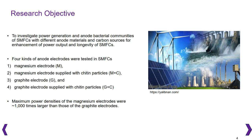Four kinds of anode electrodes were tested in SMAFCs: a Magnesium electrode, a Magnesium electrode supplied with Chitin particles, a Graphite electrode, and a Graphite electrode supplied with Chitin particles. Average maximum power density was highest in Magnesium plus Chitin at 1878, followed by Magnesium at 848, Graphite plus Chitin at 1.9, and Graphite at 0.7. Maximum power densities of the Magnesium electrode were 100 times larger than those of the graphite electrodes.